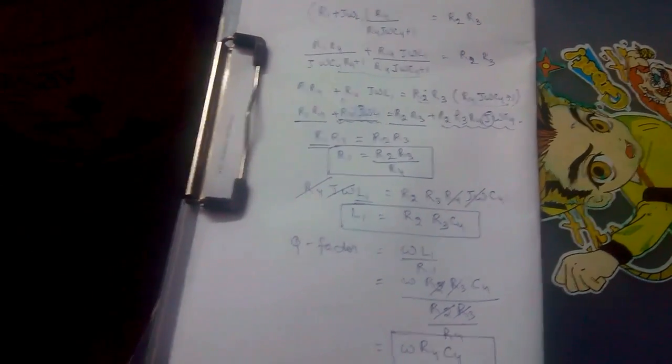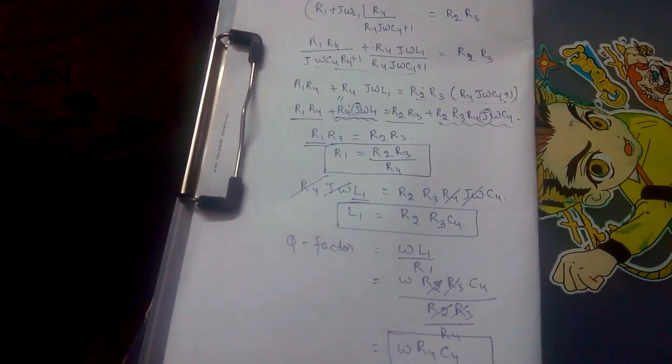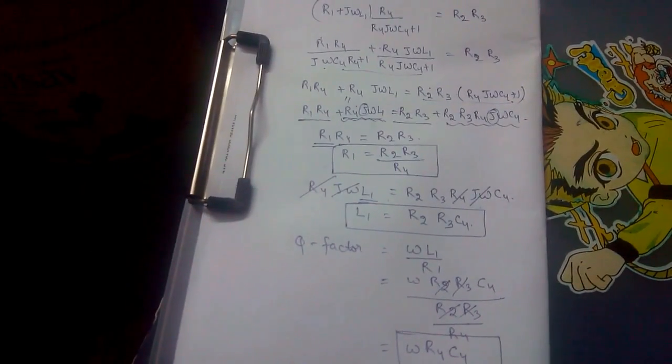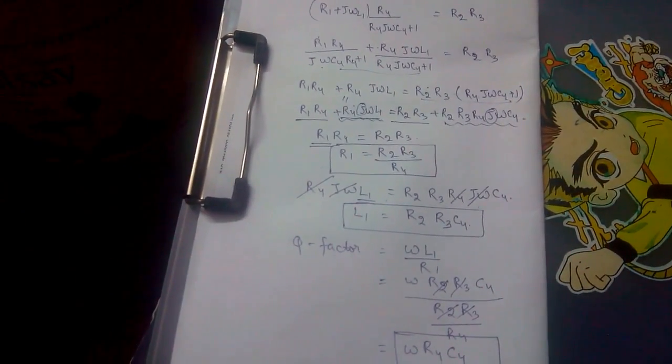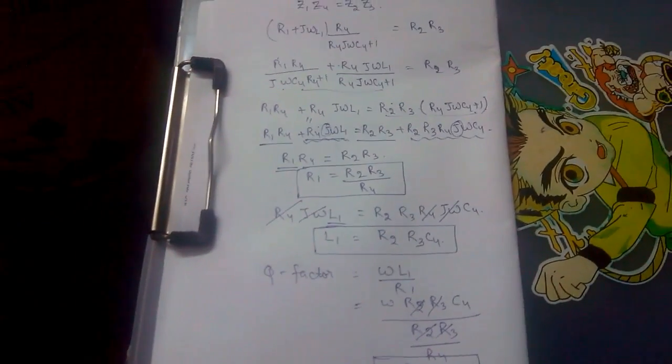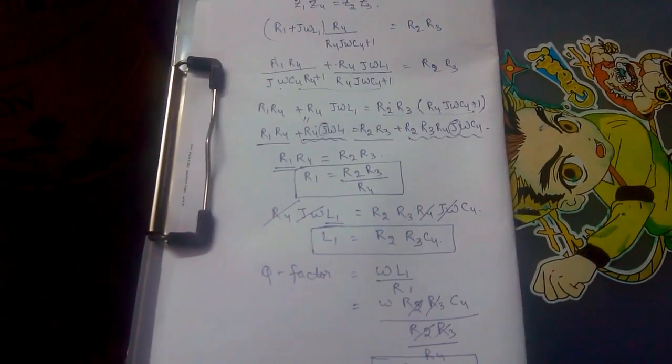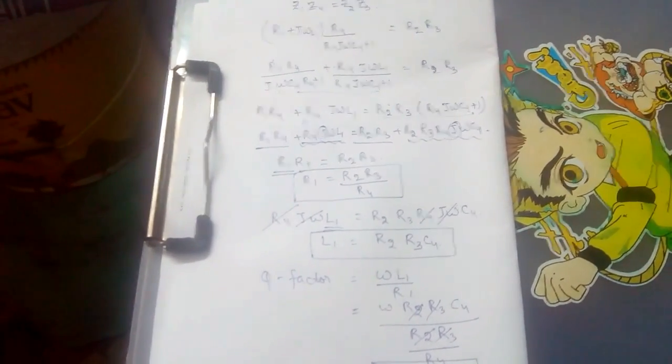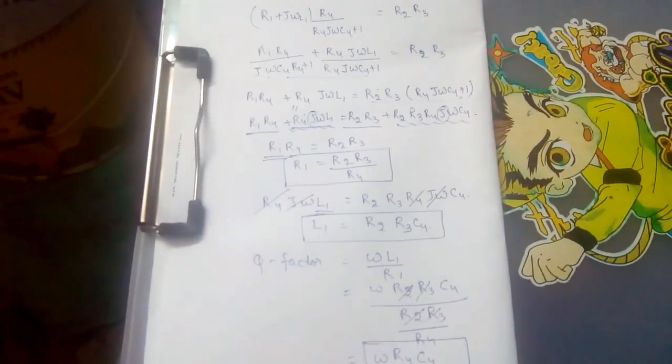Disadvantage is that it requires variable standard capacitor which is very expensive. The bridge is limited to measurement of low Q-coils. The range of Q-coils for high Q-coils demand very high value of R4, that is 10 raised power 5 to 10 raised power 6 ohms, which becomes very very expensive. Thanks for watching the video.